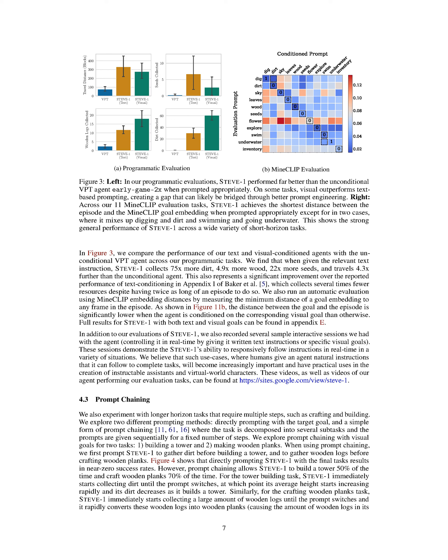In this section, we delve into the concept of prompt chaining and its application in more complex tasks that require multiple steps, such as crafting and building. We experiment with two types of prompting methods: directly instructing the agent with the final goal, and prompt chaining, which involves breaking down the task into several smaller tasks and providing these instructions one after the other for a fixed number of steps. We apply prompt chaining to two tasks — building a tower and making wooden planks. Our findings show that directly instructing the agent with the final tasks leads to almost no success. However, with prompt chaining, the agent successfully builds a tower 50% of the time and crafts wooden planks 70% of the time.